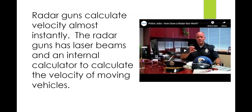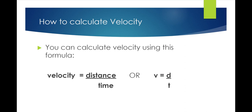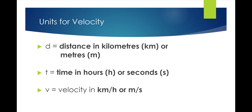Radar guns calculate velocity almost instantly using a laser beam and an internal calculator. You can calculate velocity using this simple formula: velocity equals distance divided by time, or v = d/t. Distance is in kilometers or meters, time is in hours or seconds, and velocity is then in kilometers per hour or meters per second. These are the most common units, but others can apply depending on what's being calculated.